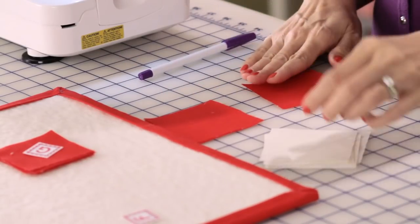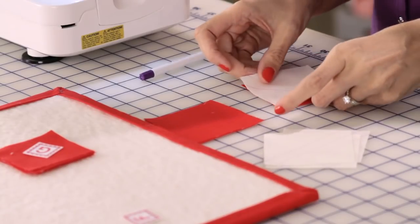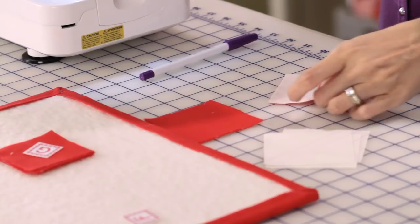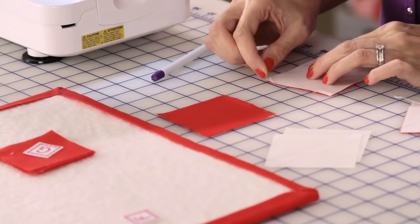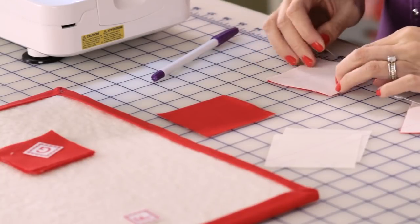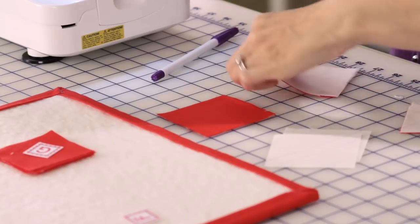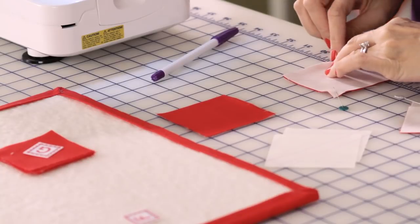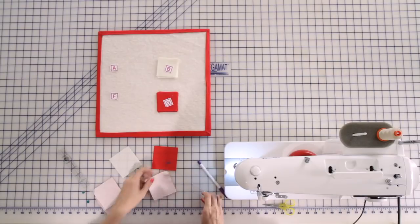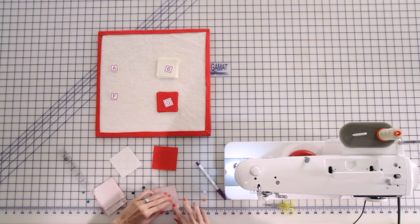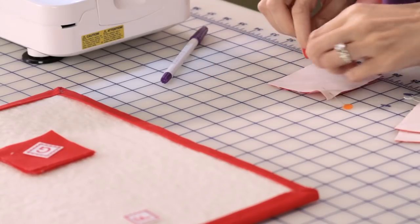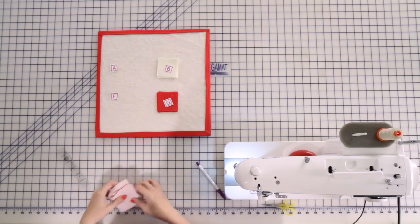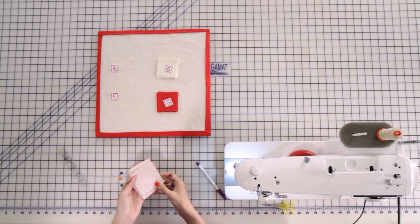Now we're going to put our Fabric A and Fabric F squares right sides together, and we're going to pin twice on each square. When you're pinning, you want to really make sure that your corners are all lined up. I'm doing two pins just to really hold it in place so when you're sewing, your fabrics do not move around and you keep a very accurate block. So now we have all four of our half square triangles pinned.